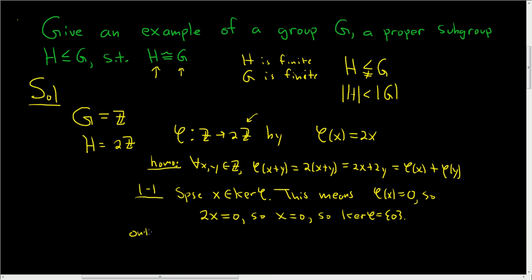What about onto? Onto is pretty easy. Take any y in 2Z. So this means that y is a multiple of 2. So you can write it as 2x, where x is in Z. Going pretty fast. I wasn't planning on proving it. And then take phi of x. It's an integer, so you can do that. And that's equal to 2x by definition of phi. But we said that's equal to y. So phi of x is equal to y. So it's onto.